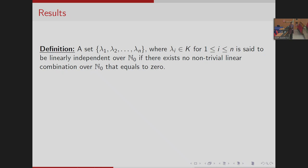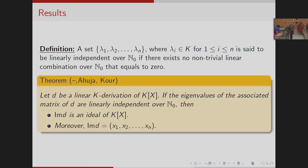Before presenting the results, a set {lambda_1, ..., lambda_n} with lambdas in k is said to be linearly independent over N_0 if there exists no non-trivial combination over N_0 that equals zero. We have proved that given a linear k-derivation D of k[x], if the eigenvalues of the associated matrix of D are linearly independent over N_0, then the image of D always forms an ideal of k[x]; moreover, the image of D is the ideal generated by x_1, ..., x_n.